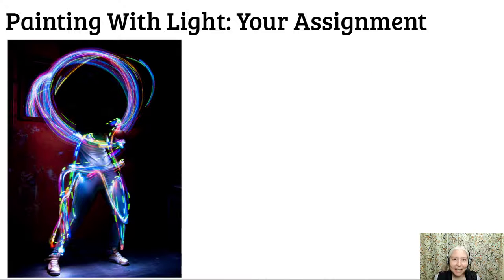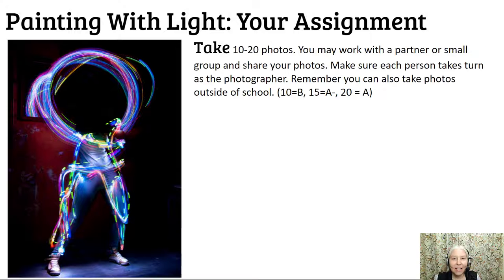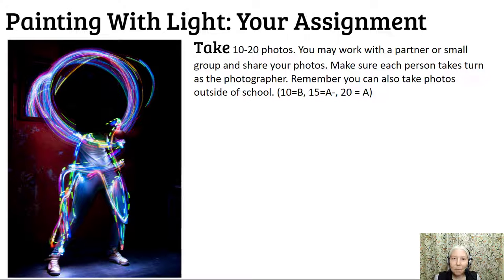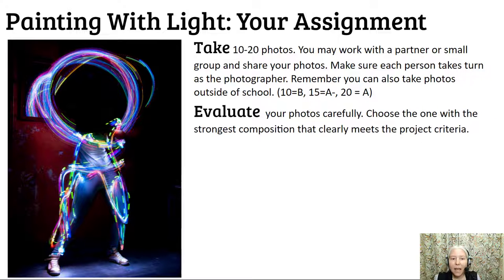Painting with light — your assignment. Take 10 to 20 photos. You may work with a partner or small group and share your photos for this project only. Make sure each person takes a turn as the photographer, as the model, and as the light operator. Remember, you can also take the photos outside of school. Evaluate your photos carefully and choose the one with the strongest composition that clearly meets the project criteria.